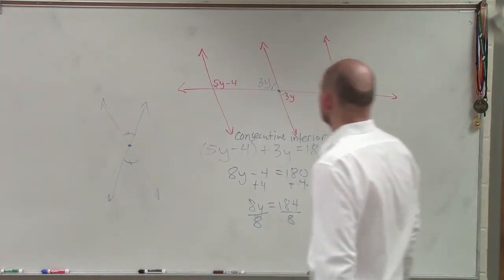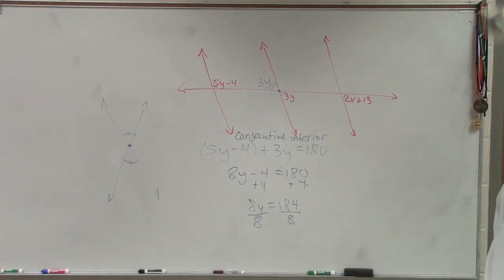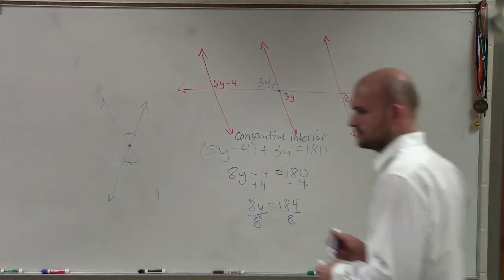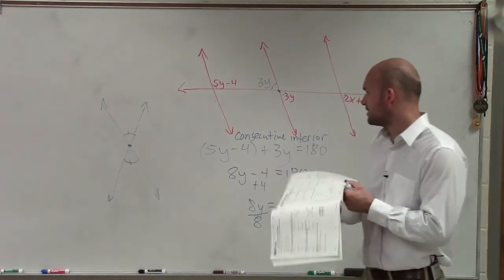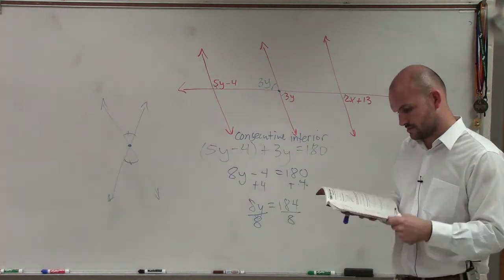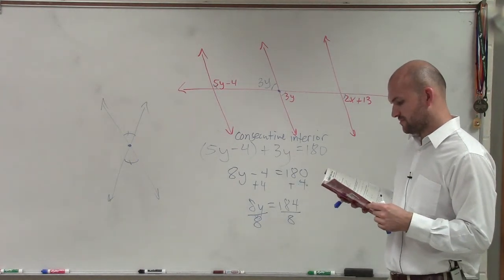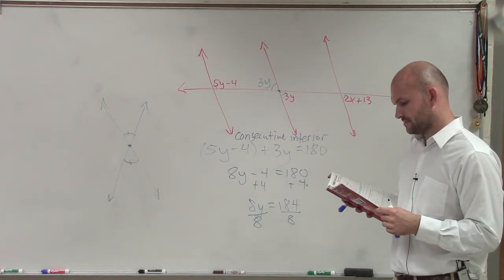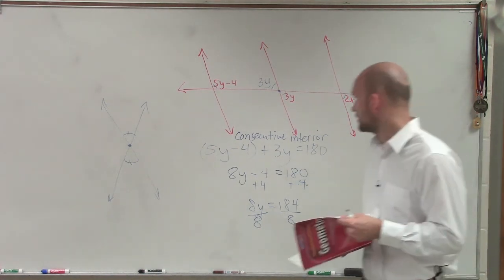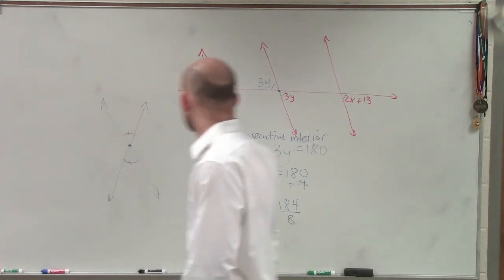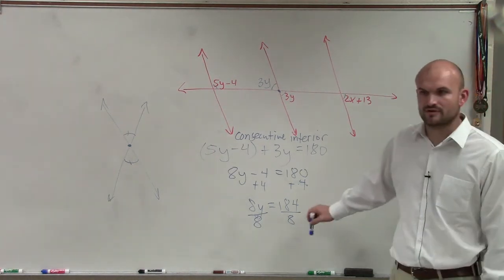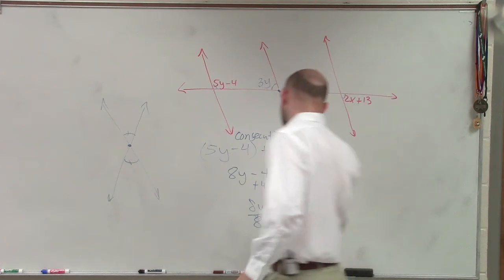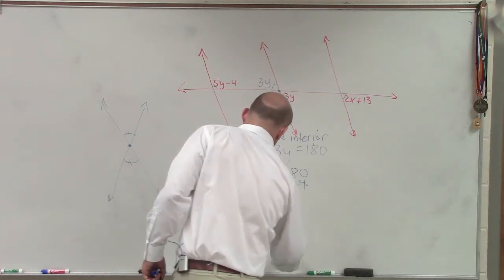So now I need to divide by 8. Was that right or what messed up? Was that problem written correctly? Where did you get 8 from? 8y. 5y plus 3y. 5y minus 4, 3y. OK. Is there anything else I'm doing? I mean, I guess that would work. All right, so what's 184 divided by 8? 23. So therefore, y equals 23.